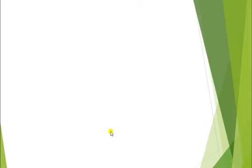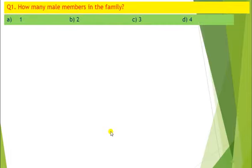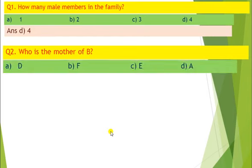Let's see our questions. Question number 1: How many male members in the family? There are 4 male members in the family. Question number 2: Who is the mother of B? Our answer is Option D. A is the mother of B.